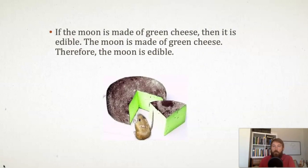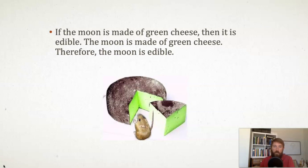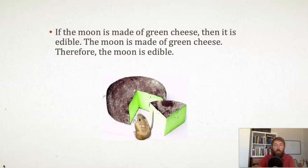'If the moon is made of green cheese, then it's edible. The moon is made of green cheese, therefore it's edible' is an argument. It's not a very good argument, but it meets both conditions. It has an evidential claim — those first two sentences are the premises — and there's an inferential claim that you should accept the conclusion that the moon is edible. It's also an explicit inferential claim because of the word 'therefore.' So this one meets all the conditions to be an argument.